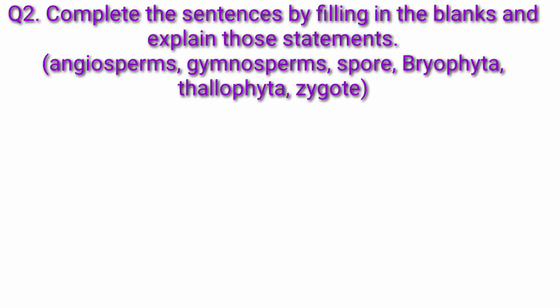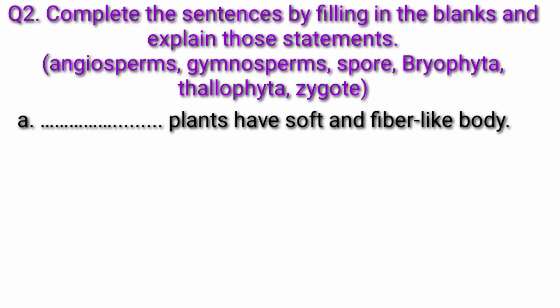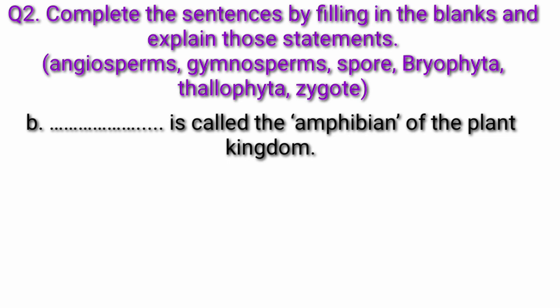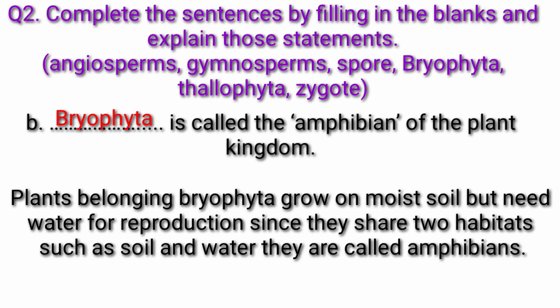Question 2: Complete these sentences by filling in the blanks and explain those statements. Word bank: angiosperms, gymnosperms, spore, bryophyta, thallophyta, zygote. Question A: Fill in the blank — plants have soft and fiber-like body. Answer: Thallophyta plants have soft and fiber-like body. Thallophyta includes algae which have soft and fiber-like body. Question B: Fill in the blank — is called amphibian of the plant kingdom. Answer: Bryophyta is called the amphibian of the plant kingdom. Plants belonging to Bryophyta grow on moist soil but need water for reproduction. Since they share two habitats — soil and water — they are called amphibians.